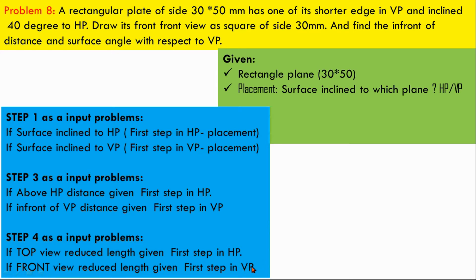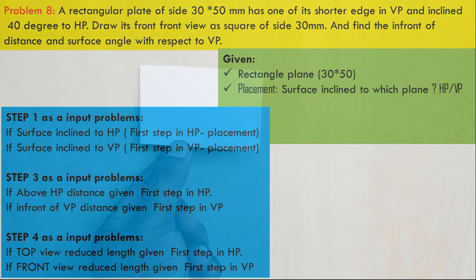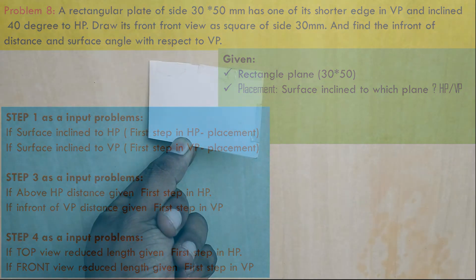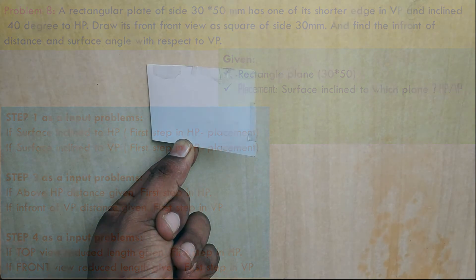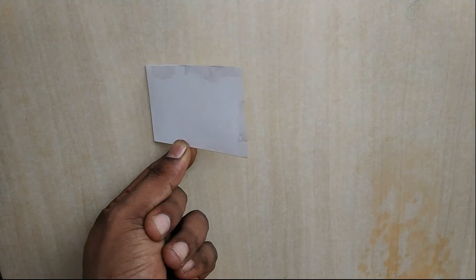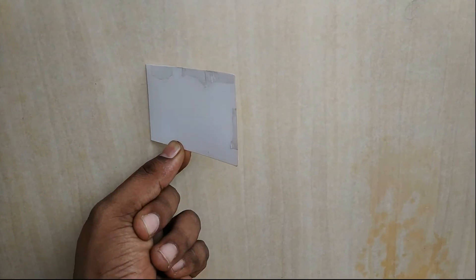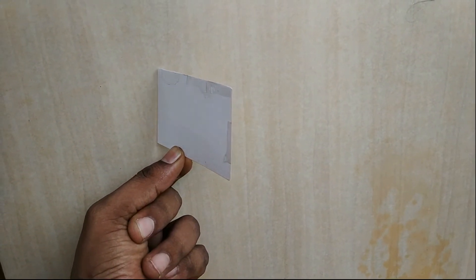Step one is placement in the VP. If you reduce the front view distance, what happens? The top view distance goes to the right side, so the first step concerns the VP. Let's look at this demo — you know a rectangular plate.